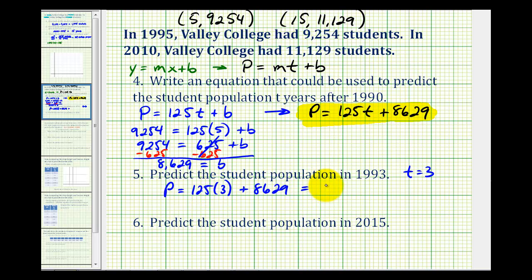125 times 3 is equal to 375, and the sum is equal to 9,004. Therefore, we can predict that in 1993, there were 9,004 students.